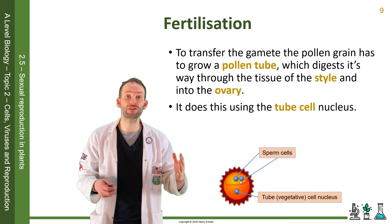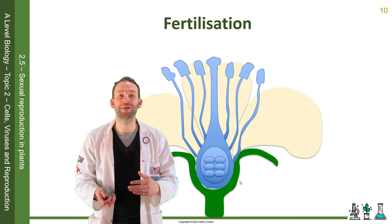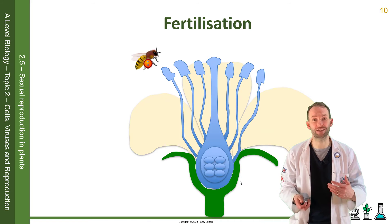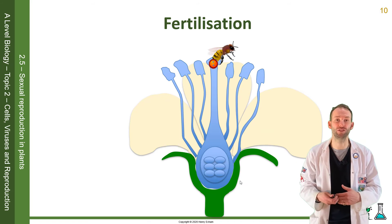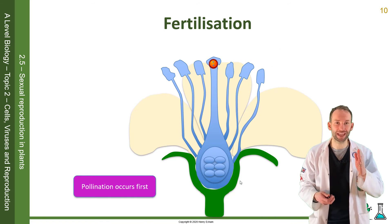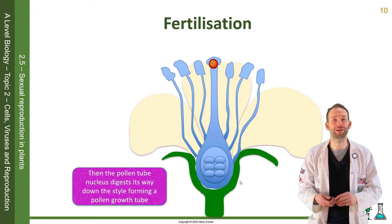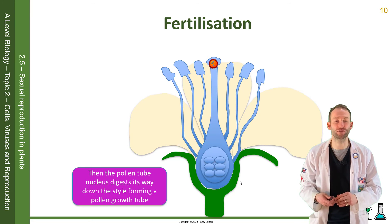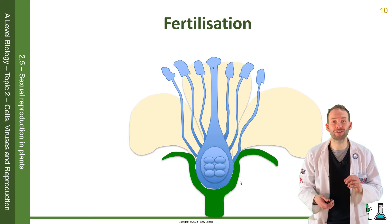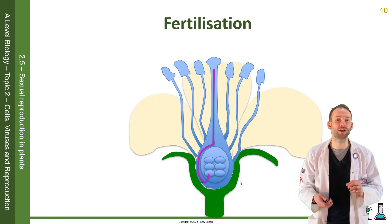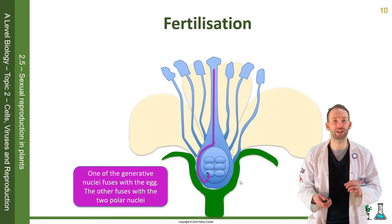Remember that after pollination the generative nucleus divides to make two nuclei. The pollen tube then digests its way down the style, forming a pollen growth tube. One of the generative nuclei fuses with the egg, and the other fuses with the two polar nuclei.